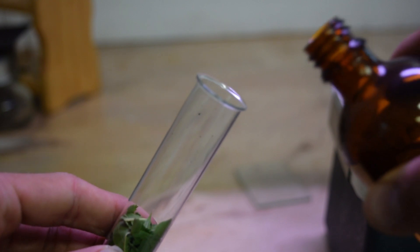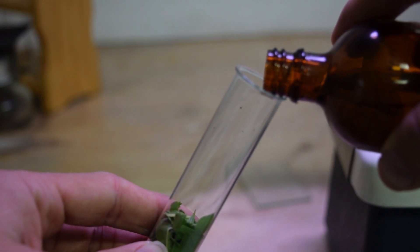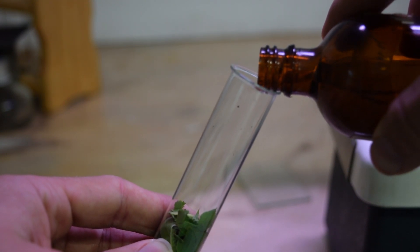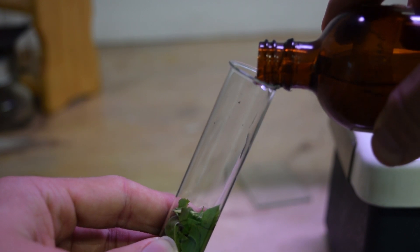The first thing to do is to tear up some green leaves and put them into a test tube. Now we need to put an organic solvent that can dissolve chlorophyll into the test tube. We're going to be using ethanol in this experiment. Put enough ethanol in the tube to cover all the leaves.